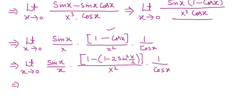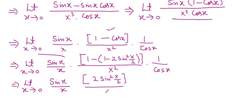This term may be further simplified like this. Limit x tends to 0 of sin x over x. Here you have 2 sin squared (x/2), and here you have x squared. This is 1 upon cos x.